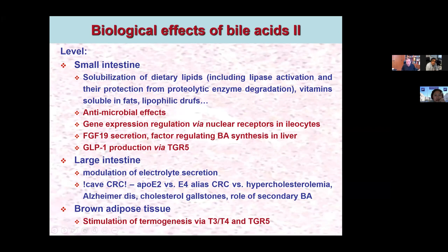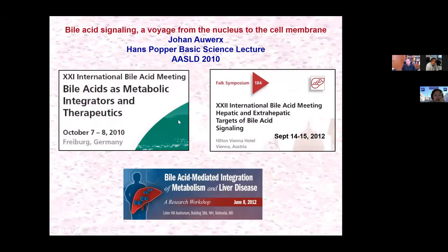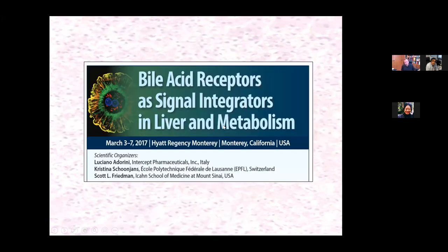At the level of brown adipose tissue, bile acids stimulate thermogenesis via T3, T4, and also via the TGR5 cytoplasmic receptor. The metabolic functions of bile acids received major attention at the AASLD meeting in 2010, when one of the key lectures was given by Johannes Keppler, one of the world experts in this field. Since then, several symposia have taken place worldwide — the last one before the COVID pandemic was in Monterey in 2017 — all stressing the importance of these metabolic pathways for human body functions.